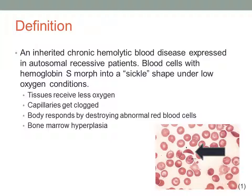Sickle cell anemia is an inherited chronic hemolytic blood disorder that expresses itself in autosomal recessive patients. These blood cells that contain the hemoglobin S turn into a sickle cell shape under low oxygen conditions. As a result, tissues receive less oxygen and capillaries tend to get clogged due to the sickle cell shape of the red blood cells. The body responds by trying to destroy the abnormal red blood cells and compensates for this loss by increasing red blood cell production, which is seen through bone marrow hyperplasia.